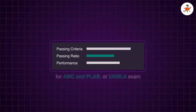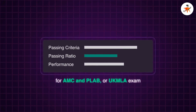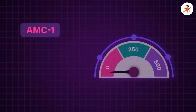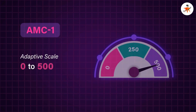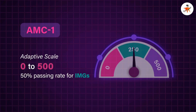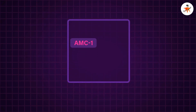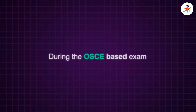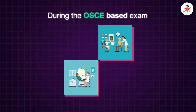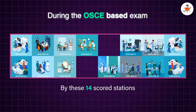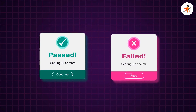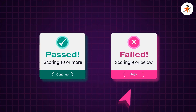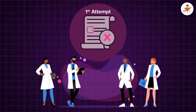The passing criteria and passing ratio for AMC and PLAB or UK MLA exams varies based upon the candidate's performance during these exams. For AMC Part 1, your score is measured on an adaptive scale of 0 to 500, where a passing score is typically represented at 250. This exam has about a 50% passing rate for IMGs. After passing the AMC CAT examination, you may enrol in AMC Part 2, the OSCE-based exam with 16 total stations, of which 2 are pilot stations and 14 are scored. To pass, you must score 10 or more during the scoring stations; candidates scoring 9 or below will be considered as failing. It has only about a 30% passing rate, as many IMGs are not able to make it in their first attempt.